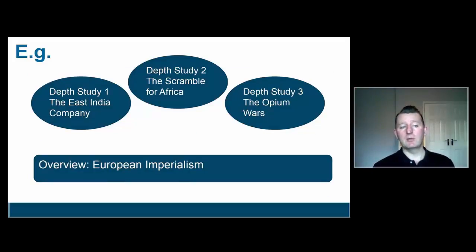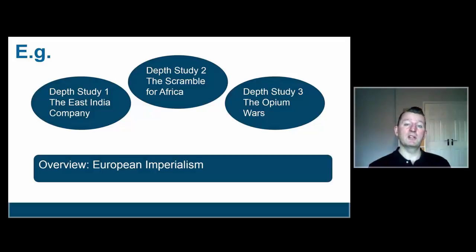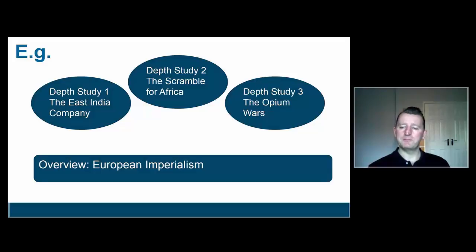Here's another example. We might start a scheme of work on European imperialism with three depth studies rather than the big picture. You could teach these one after the other, or set up project tables and have each group look at one case study, then tease out some key issues through sharing: the first possibly being trade, the second showing the competition among European powers to carve up the rest of the world into imperial outposts, and the third illustrating the impact of technology — the fact that the British had machine guns played a huge part in the opium wars in China. So trade, European competition and technology would lead into the teacher drawing this together and creating an overview of European imperialism.